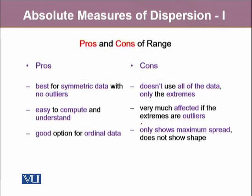There are a few pros and cons that come with range. It's best for symmetric data with no outliers, because like other measures, range also gets affected by outlying observations. It's easy to compute, easy to understand, and a good option for ordinal data. Its disadvantages are that it does not use all the data — it only uses the extreme values, whether lower or upper extreme. Moreover, it is heavily affected by outlying observations, and it only shows maximum spread without revealing any shape of the distribution.